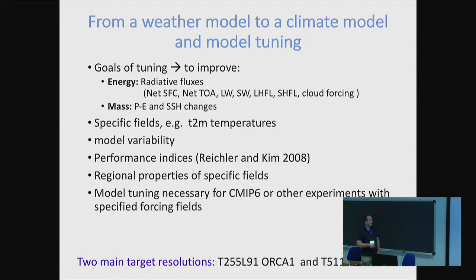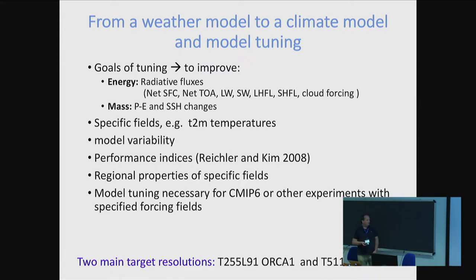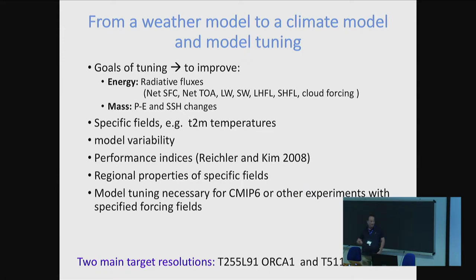It's not all about radiative fluxes. You're also interested that the long-term averages or statistics of certain fields are as realistic as possible. Of course you have the problem of having good references to compare with. For EC-Earth, the trick is actually to compare with ERA-Interim, which is sort of cheating because we compare the model sort of with itself. But it's helpful because at least it gives a clear reference. EC-Earth should at least be close to ERA-Interim if possible. It's also about model variability.